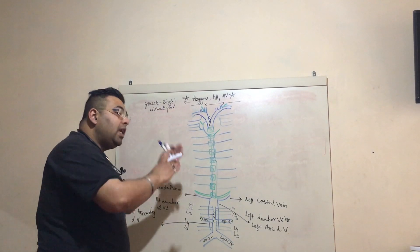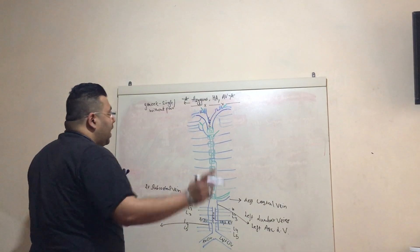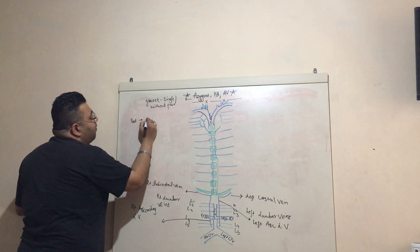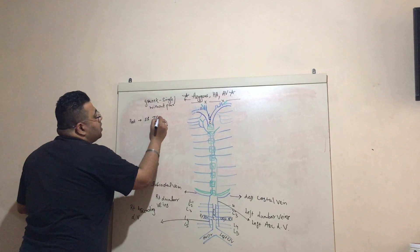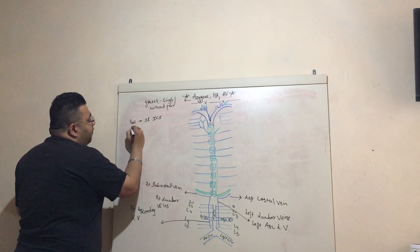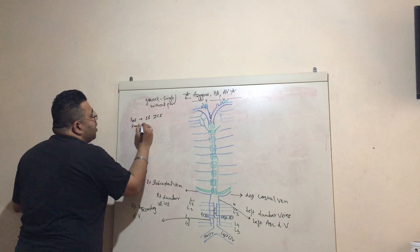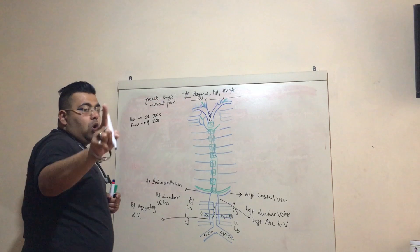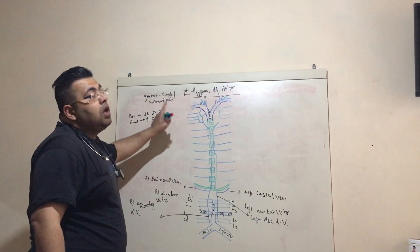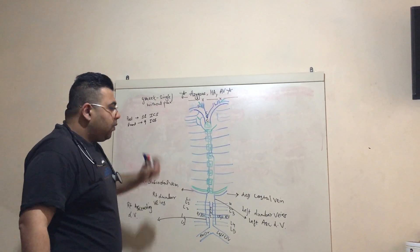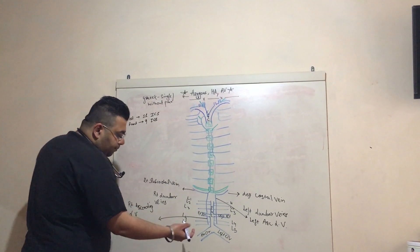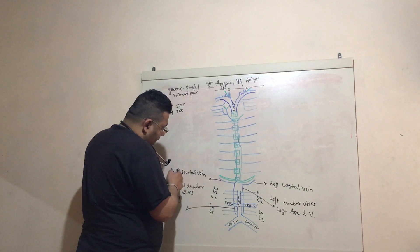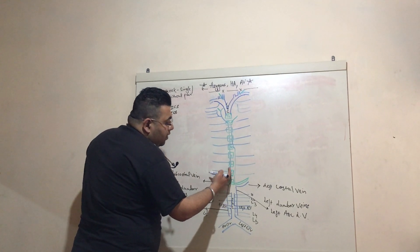Because the azygous-hemiazygous system is on the posterior abdominal wall, remember that on the posterior side we have 11 intercostal spaces, while on the front side we have 9 intercostal spaces. That's why we have 11 intercostal veins, which I will draw now.